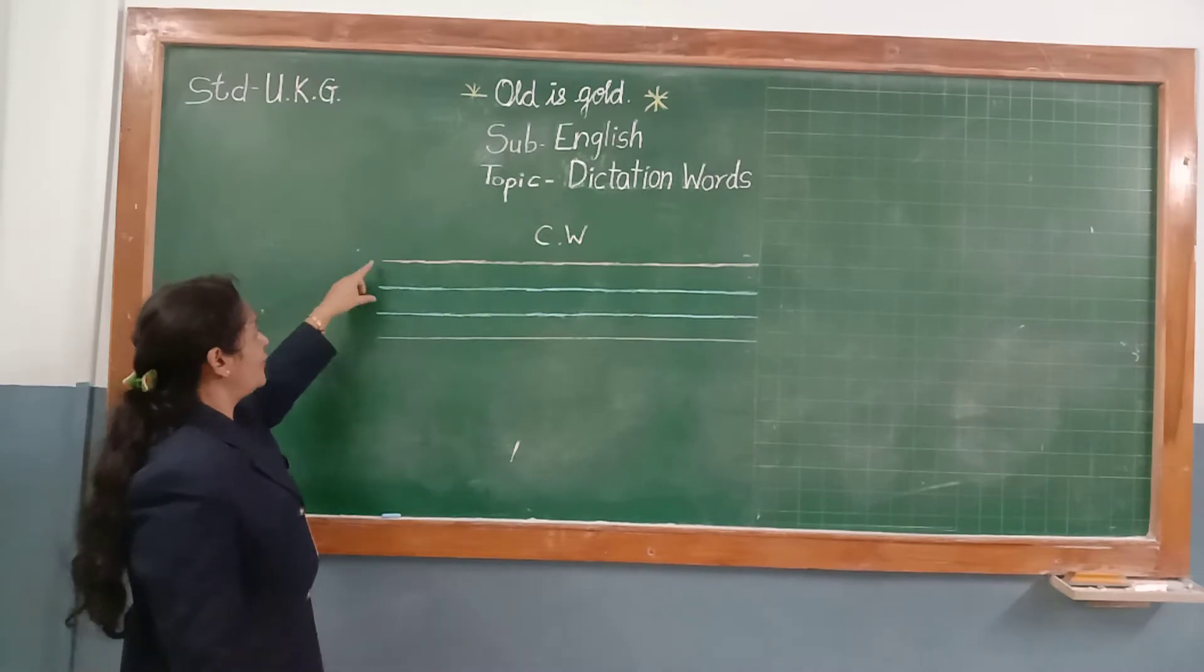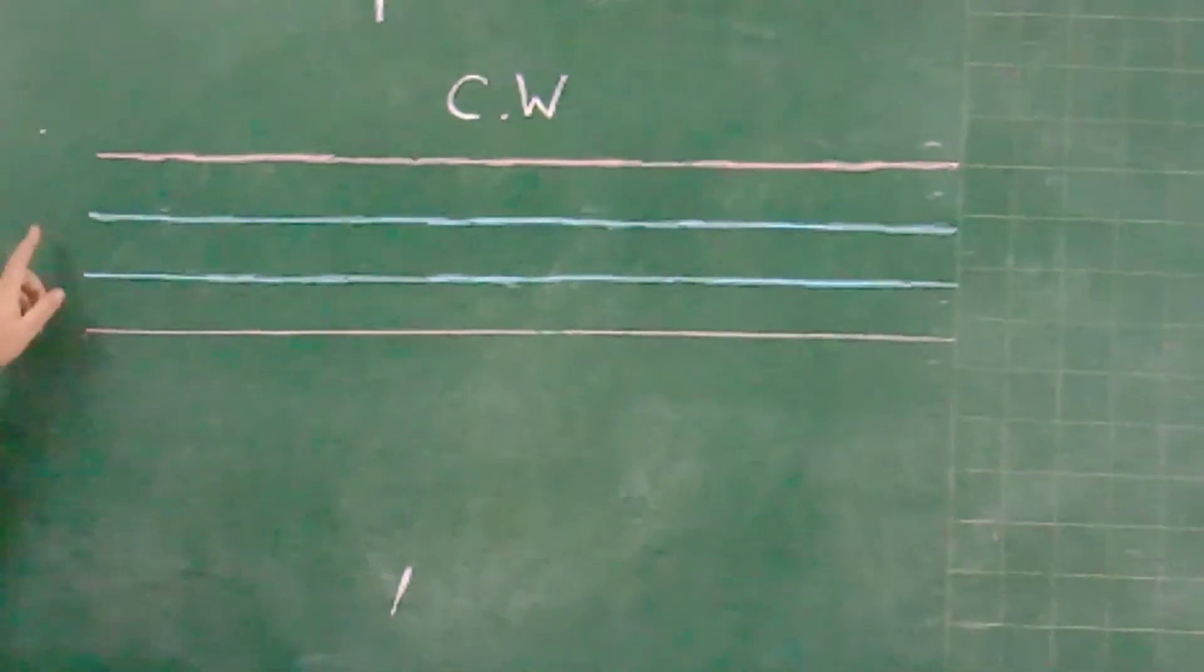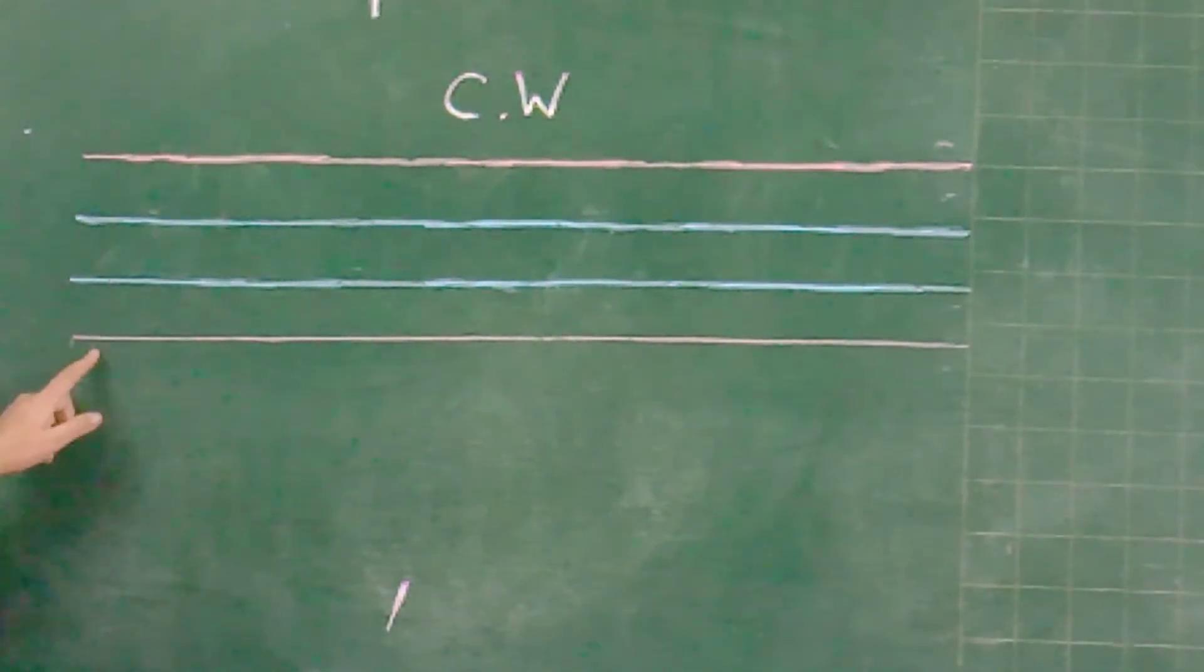Look to the blackboard. 4 lines are there. Red line, first blue line, second blue line and red line.